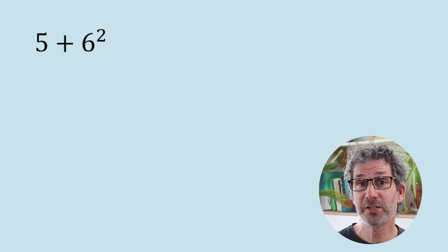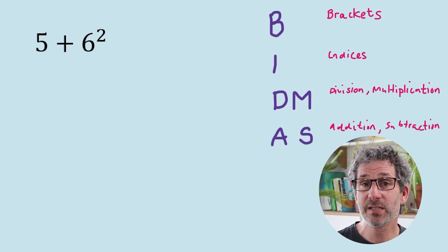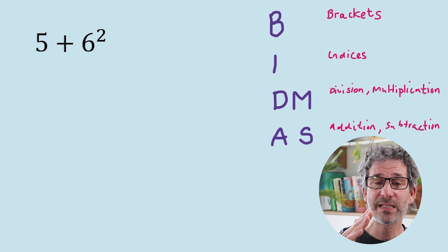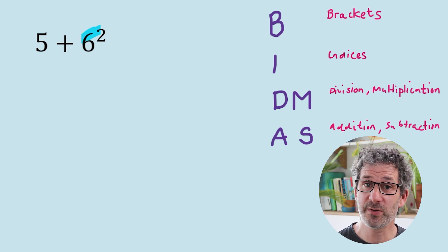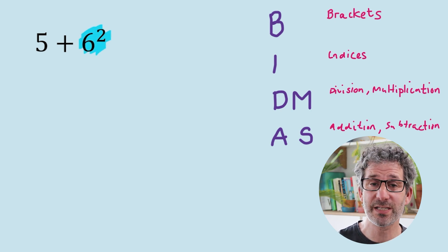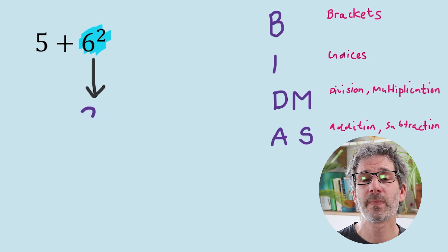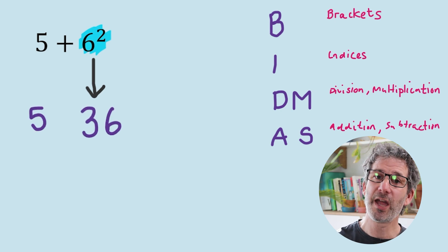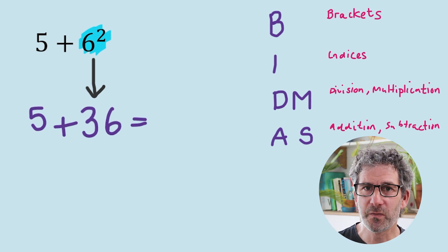Next: 5 add 6 squared. Do we have any brackets? No, we don't. So we move on to the next thing, which is indices. Do we have any of those? Yes — we've got 6 squared. So 6 squared is 36. The calculation then becomes 5 add 36, which is 41.